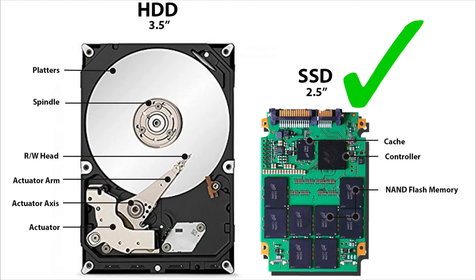RAM is primary storage — whatever the CPU accesses, it accesses from the high-speed RAM, but RAM is not permanent. For permanent storage we have secondary storage: HDD (spinning disk) and SSD (solid state drive). SSDs have no mechanical components and are much, much faster than HDDs. Do not buy a laptop with only an HDD — it will bottleneck your computer terribly, even if you have a good processor and graphics card.